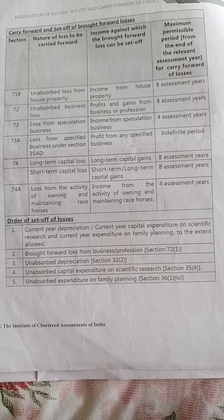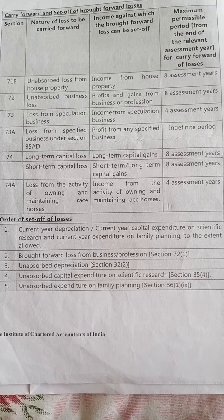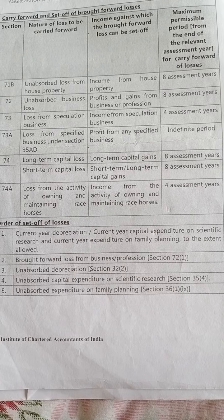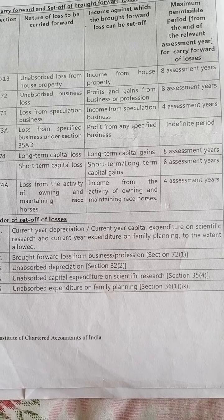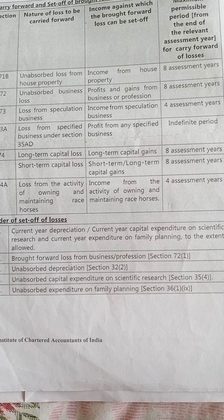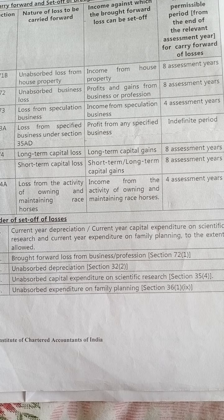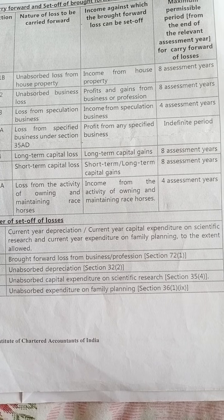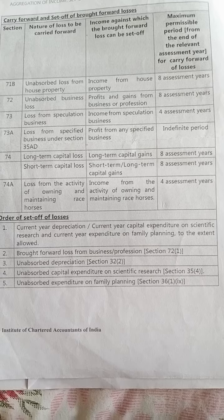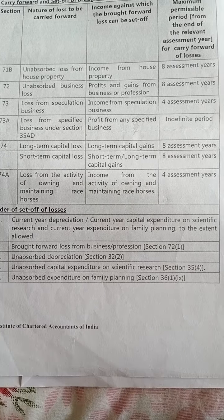Let us see the order of set off of losses, which applies to business or profession. First, current year depreciation or current year capital expenditure on scientific research is charged. If some amount remains, then brought forward loss from business or profession is set off. Next, unabsorbed depreciation is set off, followed by unabsorbed capital expenditure on scientific research, and finally unabsorbed expenditure on family planning.